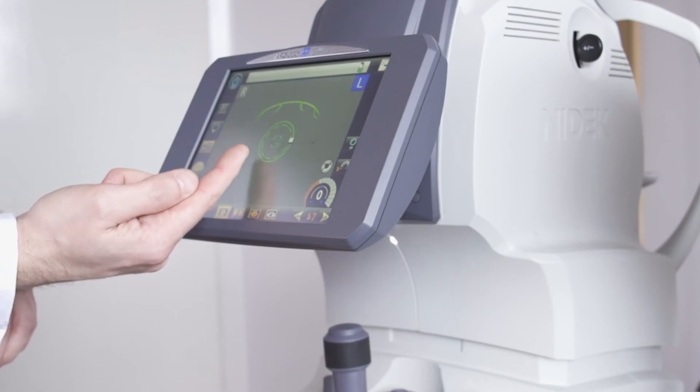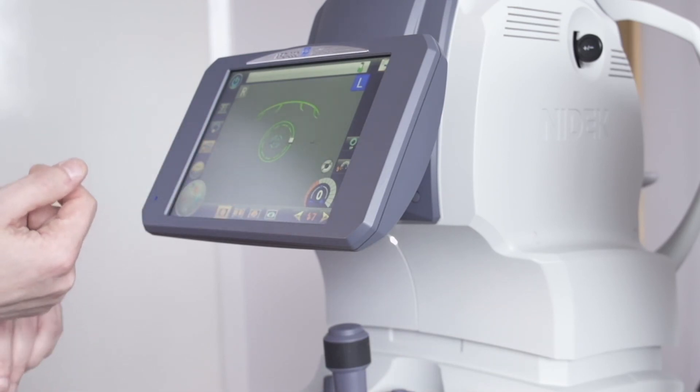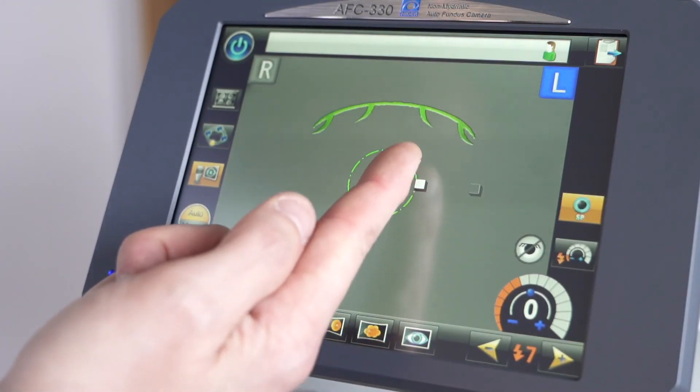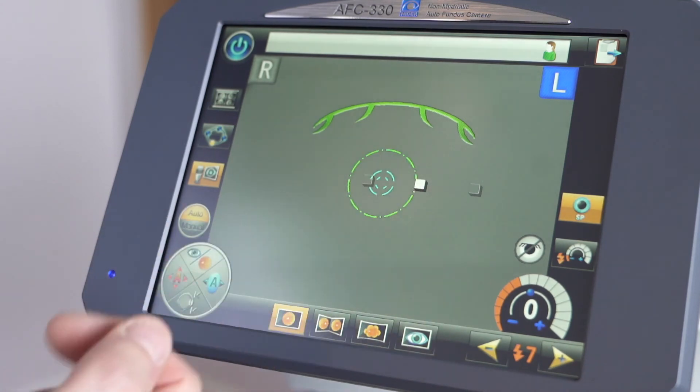Ideally, the outer circle which equates to 4mm pupil size should be your minimum pupil size. If we press the small pupil mode, we go down to a smaller pupil size of 3.3mm to allow us to take photos with a smaller pupil.